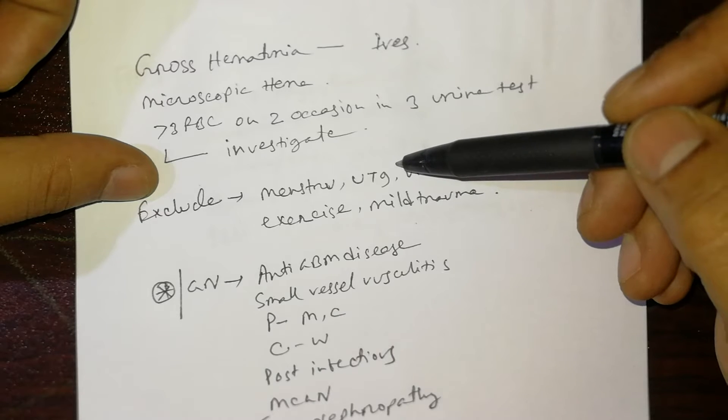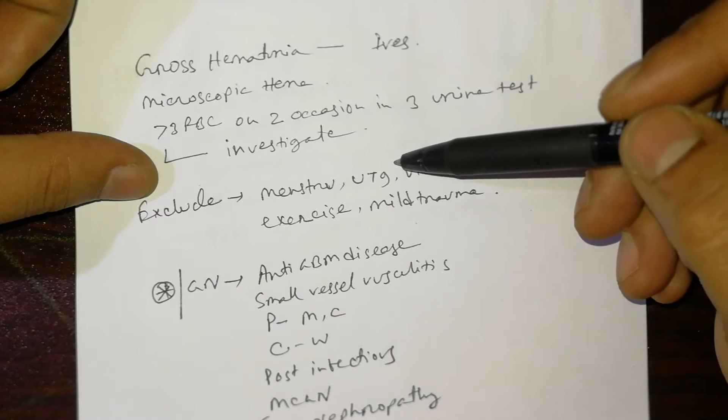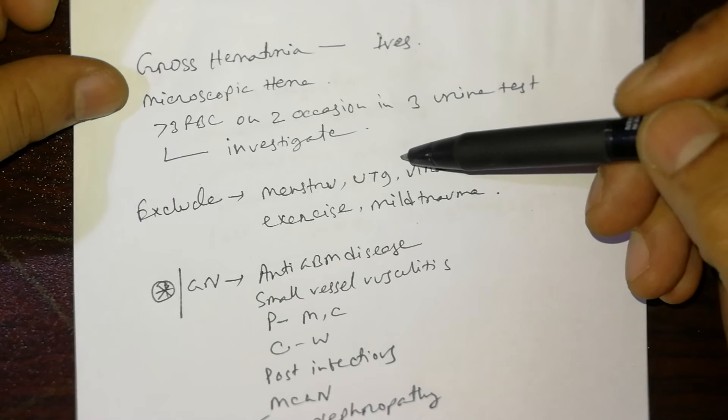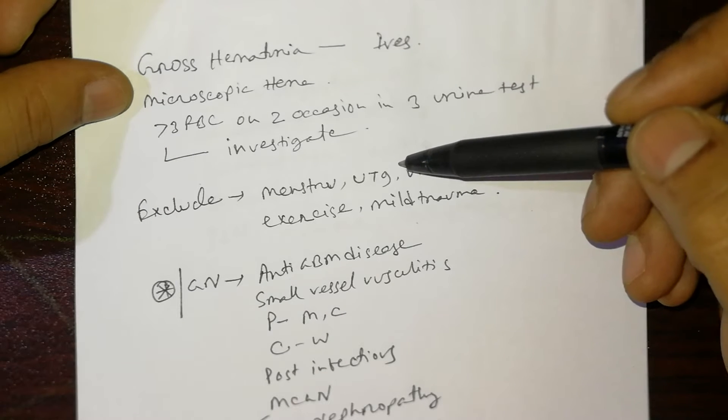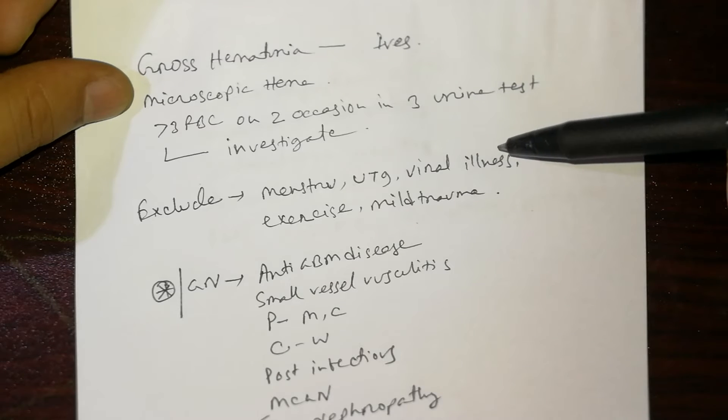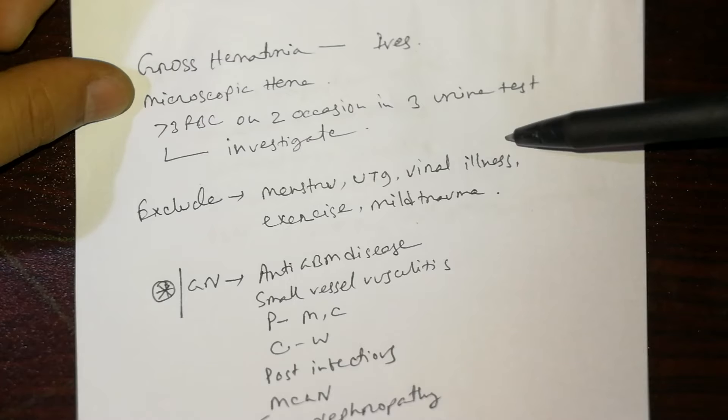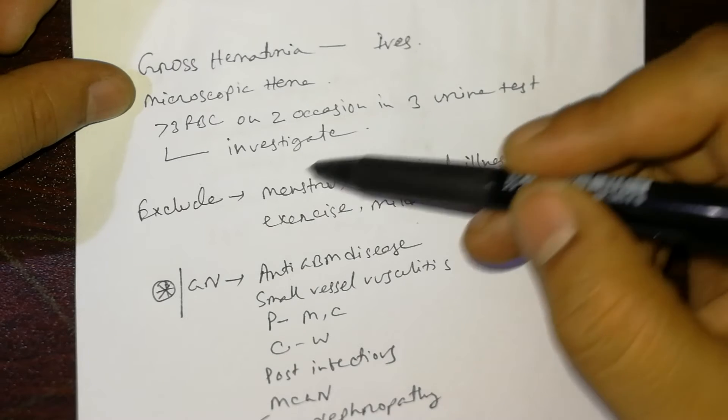Also look for low back pain, vomiting, and fever with chills and rigor in upper UTI. Viral illness, exercise, and mild trauma, especially trauma to the kidney, ureter, bladder region, or urethral region, can cause temporary hematuria that resolves after treatment or in a few days.